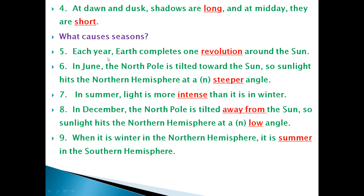What causes seasons? Each year, Earth completes one revolution around the Sun. The answer is 'revolution'. Number next: In June, the north pole is tilted towards the Sun, so sunlight hits the northern hemisphere at a steeper angle.